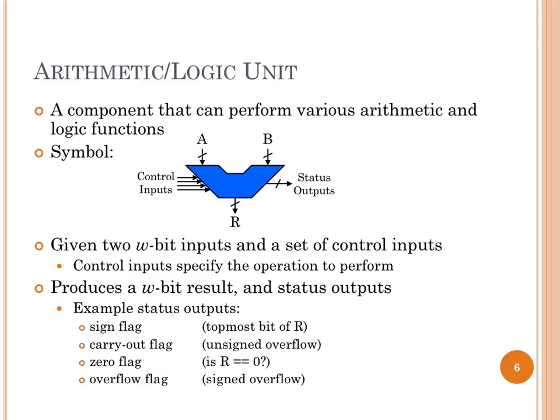We get a w-bit result R, and also various status outputs. We may want to generate status results indicating whether our computation was successful. The carry-out flag can be treated as an unsigned overflow indicator — if we're doing unsigned arithmetic and the high carry-out is 1, something went wrong. There's also an overflow flag for signed overflow: for example, adding 120 and 110 in a signed representation could wrap around and give a negative result, which the overflow flag would indicate.